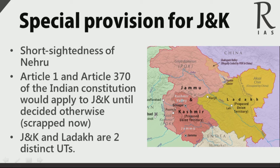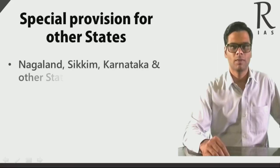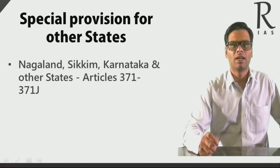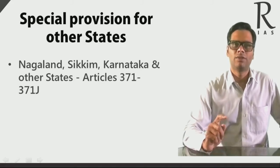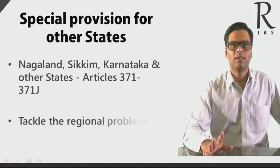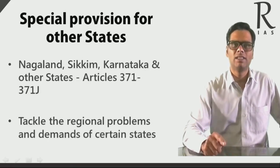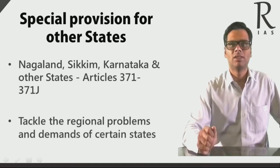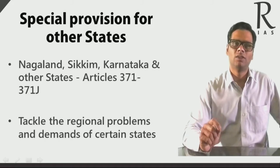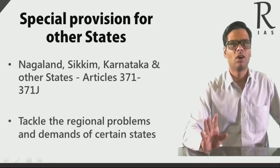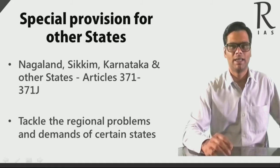As of now, there is only one constitution in India and it applies to the entire territory, although there are certain special provisions for specific Indian states. We also have Nagaland, Sikkim, Karnataka and other states running from Article 371 to Article 371J, which have been inserted to tackle the regional problems and the demands of certain states. Please run through these articles — they can be found in the constitution in the Rama ISF.